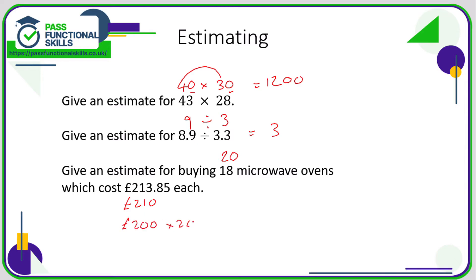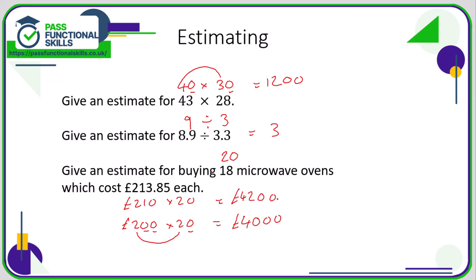So 200 times 20 — 2 times 2 is 4, and let's put back those three zeros — so four thousand pounds. But it's absolutely fine if you wanted to round it to 210, which would be slightly more accurate: 2 times 21 is 42, put back the two zeros, giving 4,200. Either of these answers would be perfectly acceptable.